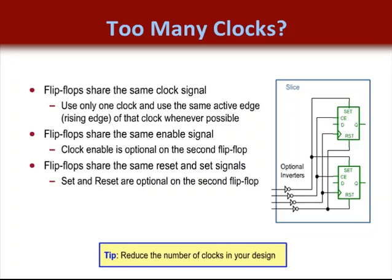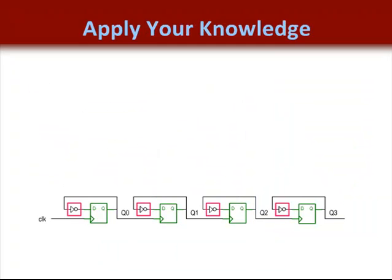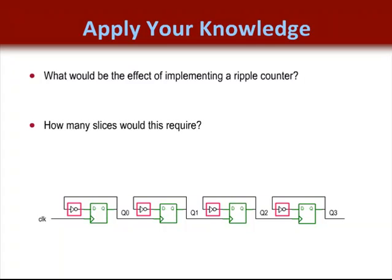So our best recommendation is to try to reduce the number of clocks in your design so you can improve your device utilization. In this example, we have built a ripple counter, and we want to ask you a couple of questions. What would be the effect of implementing a ripple counter inside of your FPGA? And how many slices do you think this would require? Go ahead and think about this situation a little bit and see if you can determine what is wrong with building a ripple counter inside your FPGA.